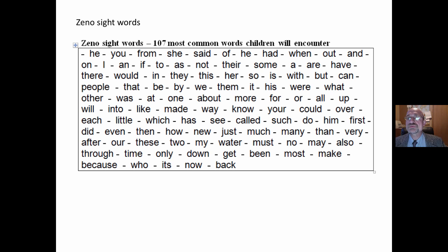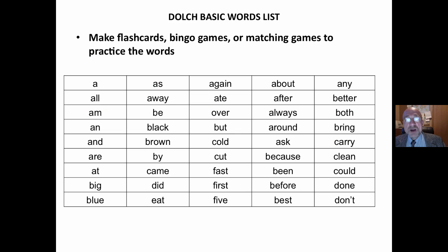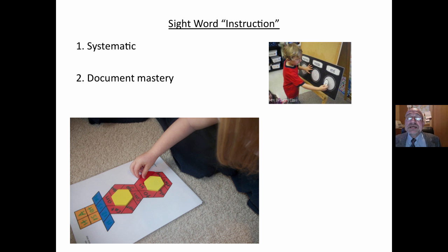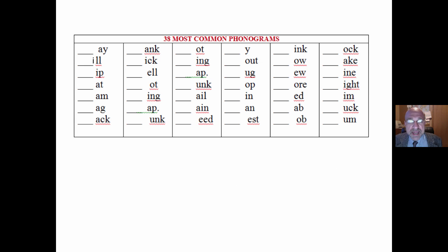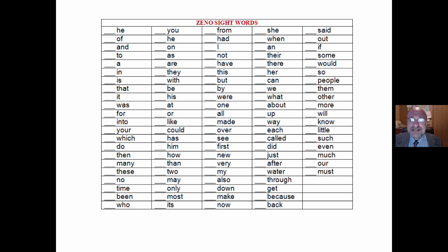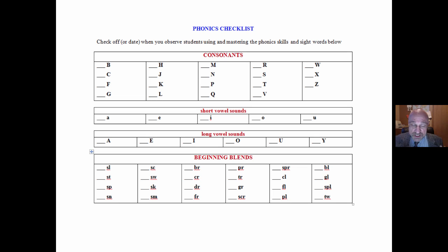An example of the Xeno sight words covers the 107 most common words, and here's part of a Dolch list. Instruction should be systematic — and systematic does not mean prescribed or a rigid way of teaching. It simply means you have a plan and you document mastery. I recommend using a phonics checklist where you check off when you teach a reading sub-skill, including sight words and the 38 most common phonograms. This gives you a sense of what to teach and documents when you have taught it.